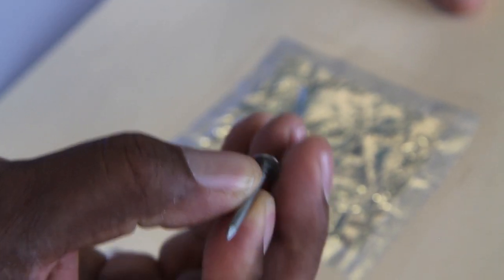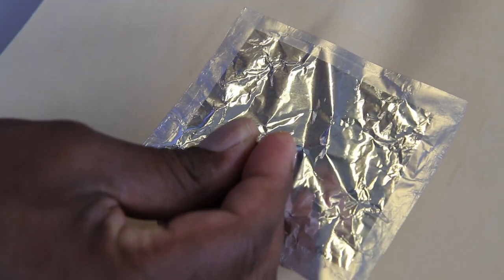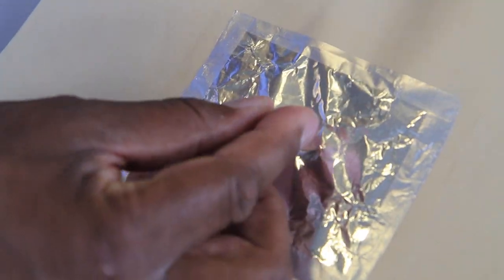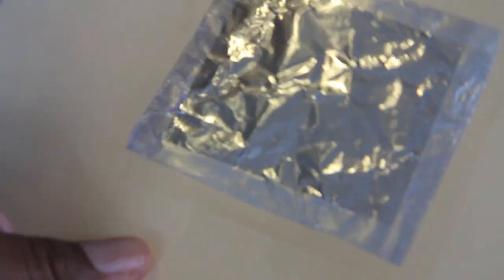All we need to do is pierce the aluminum foil with the nail. So I'll turn like this so you see how I do it. I'll go right in the center and just poke a small hole just like that. That's all that's needed.